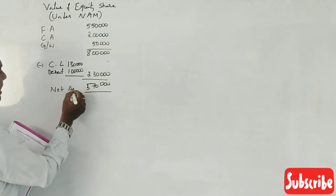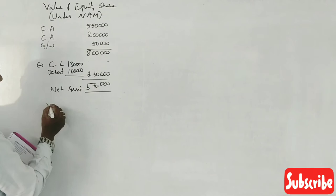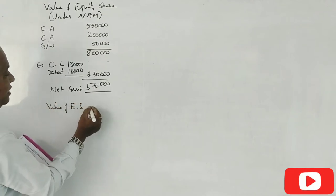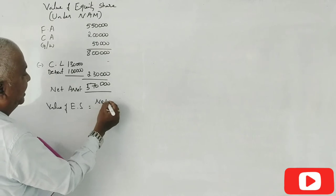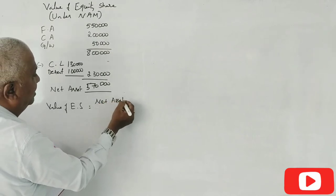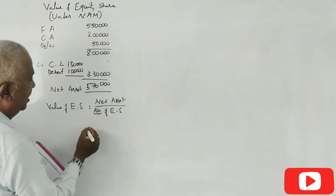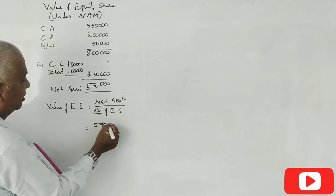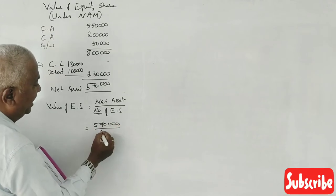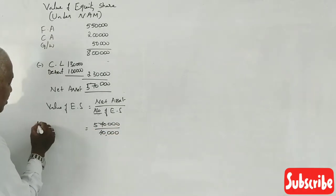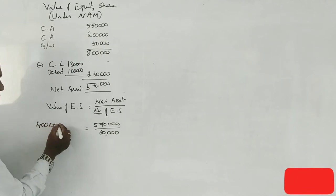The value of equity share is equal to net asset divided by number of equity shares. This is 5,70,000 divided by equity shares.